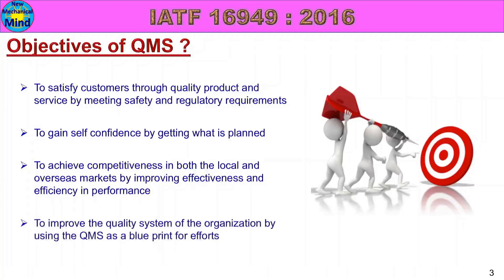To improve the quality system of the organization by using the quality management system as a blueprint for efforts — like using a drawing blueprint as a base, using the quality management system as a blueprint to plan all company activities so that quality improves in the company's working system. These are all the objectives of the quality management system.